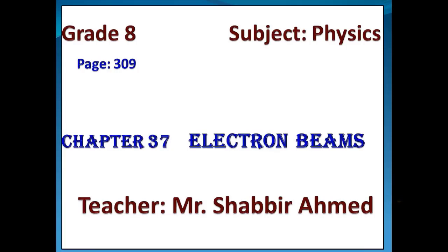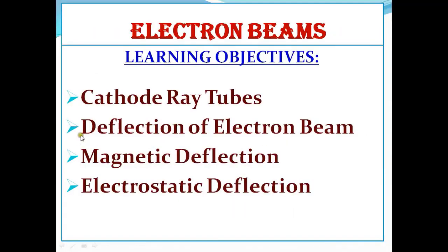As-salamu alaykum and very good morning to you all. Today in Grade 8 Physics we are going to continue our lesson from Chapter 37, that is electron beams. We will study page 309, and in this we have some learning objectives for today's lesson. We are going to talk about the cathode ray tube, then the deflection of the electron beam, where there are two types: magnetic deflection and electrostatic deflection, and why these deflections happen in the electron beam.